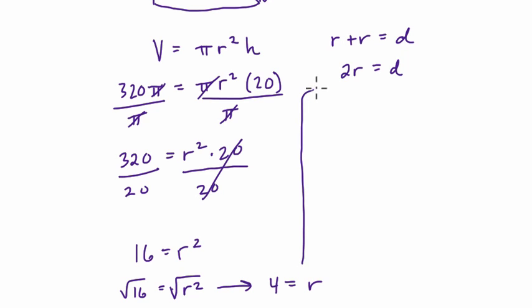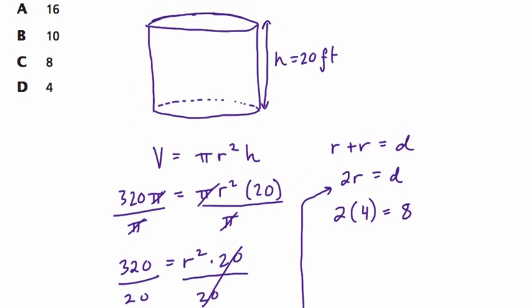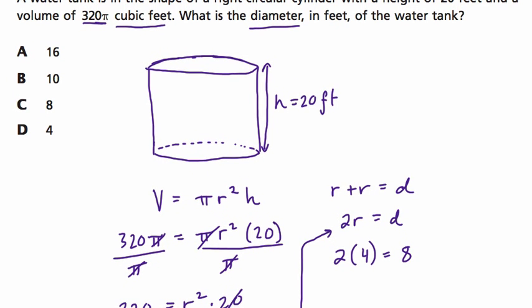If we plug that back into our situation up here, 2 times 4, 2 radii equals our diameter, and our diameter is 8. And if you want to, you can check this. Plug in 8 for your diameter, recalculate, plug in 4 for the radius, square it, multiply it by π and 20, and you will get the volume. Anyway, the answer is 8. Thanks. Hope this helped.